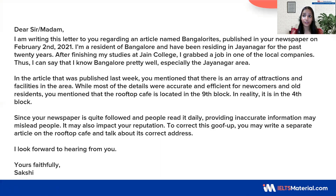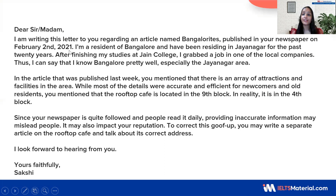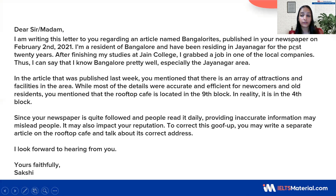Now that we have understood the structure, let's see how we can apply it in the letter. We have started with a salutation: Dear Sir or Madam. Next, we are writing the purpose of the letter: I'm writing this letter to you regarding an article named Bangalore Writes, published in your newspaper on February 2nd, 2021. So here you have expressed the purpose of the letter clearly. Now talking about the first bullet point: I'm a resident of Bangalore and have been residing in Jayanagar for the past 20 years. After finishing my studies at Jain College, I grabbed a job in one of the local companies. Thus, I can say that I know Bangalore pretty well, especially the Jayanagar area. We have covered the first bullet point.